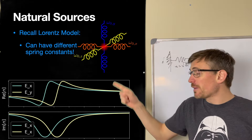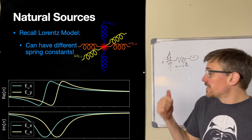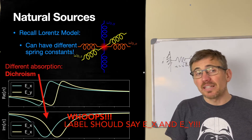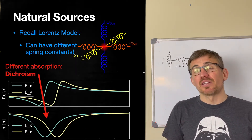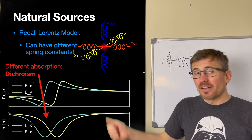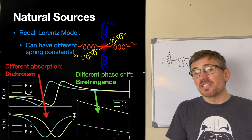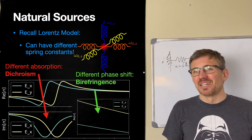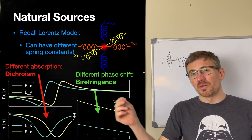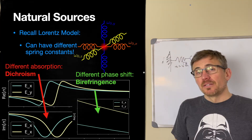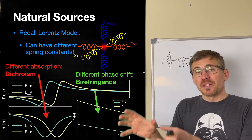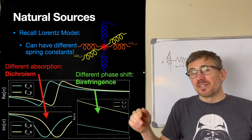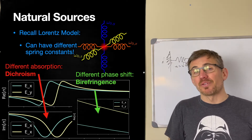This gives us different real and imaginary parts of the index of refraction for different polarizations. When the absorption is different along x than along y, we call that dichroism. When the real part of the index of refraction — which gives us the velocity c/n in the medium — differs between polarizations, we get different phase shifts. Different imaginary parts give us polarizers via dichroism; different real parts give us different phase shifts between H and V polarized light, and we call that birefringence.